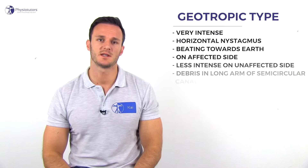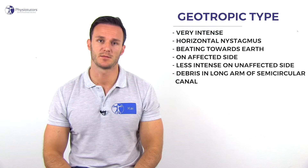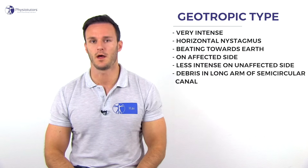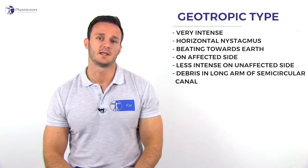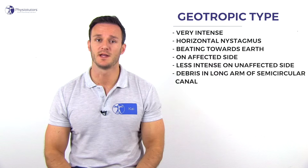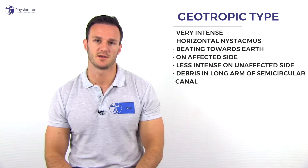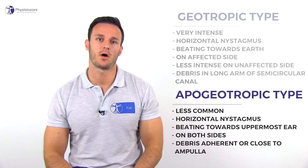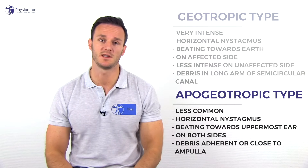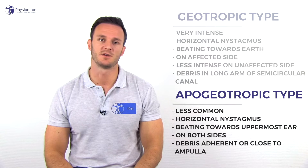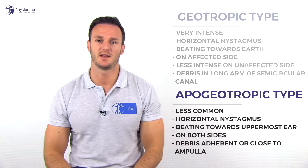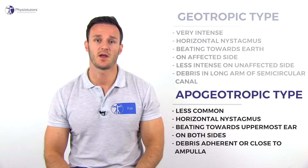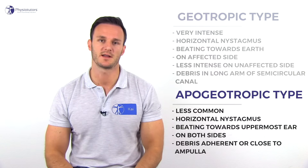Geotropic type nystagmus is marked by a very intense horizontal nystagmus beating towards the earth on the affected side, and usually less intense beating towards the earth on the healthy side. It seems probable that in this form, the calcium carbonate debris is located in the long arm of the semicircular canal. Apogeotropic type, which is less common, shows horizontal nystagmus beating towards the uppermost ear on both sides. In this case, the calcium carbonate debris is located adherent or close to the ampulla of the semicircular canal, and the side opposite the strongest nystagmus is the affected ear.